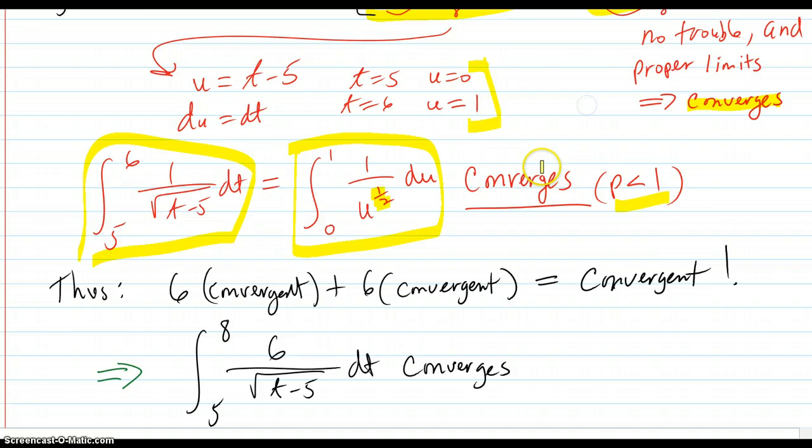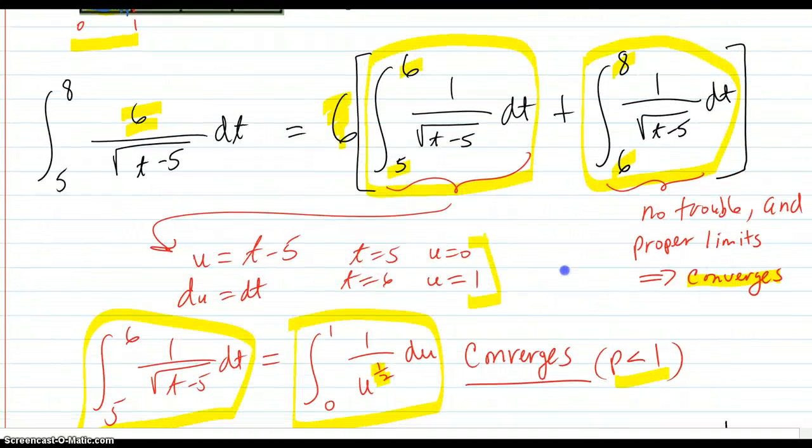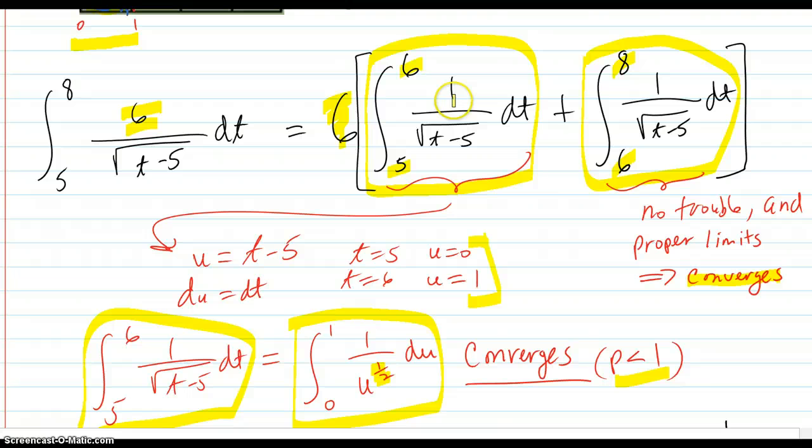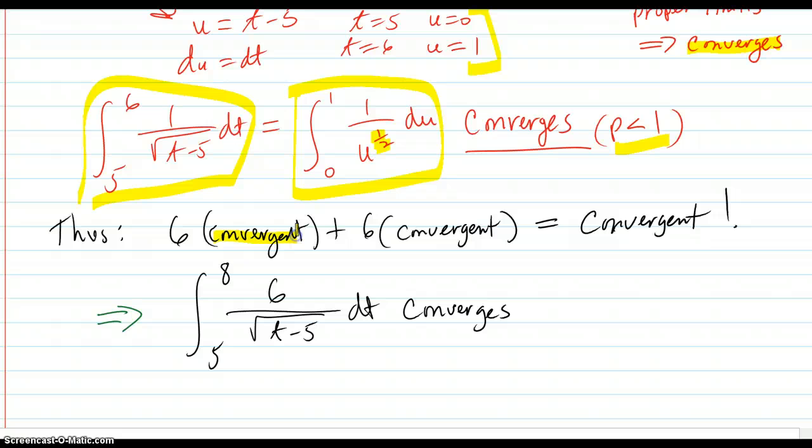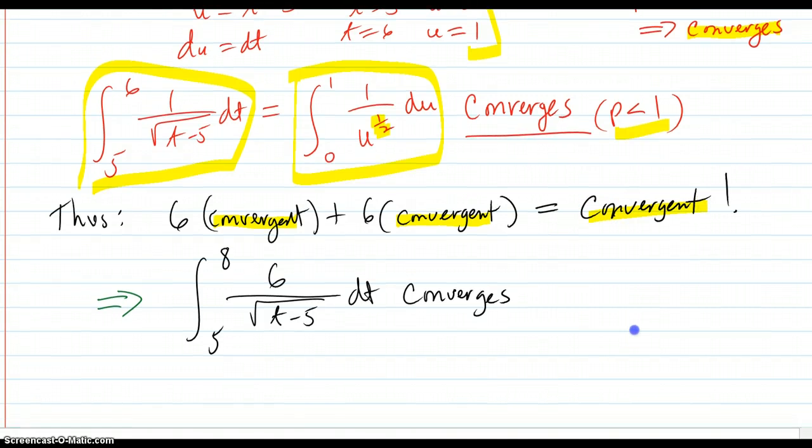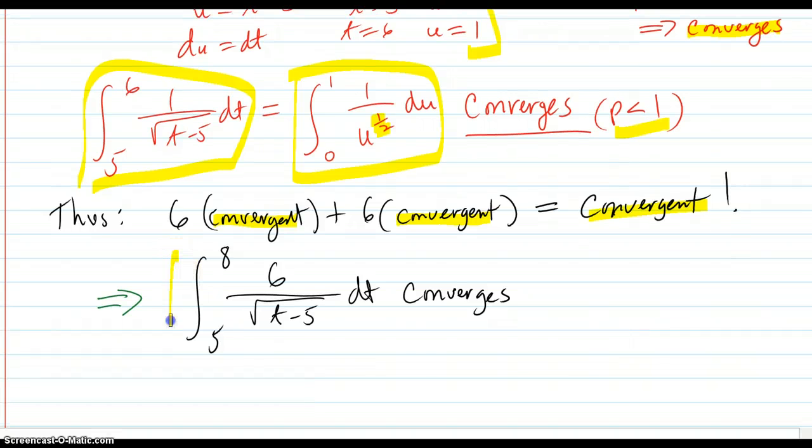So looking back up to here, 6 times something that converges plus 6 times something that converges is definitely convergent, or it converges. Therefore, the original integral converges.